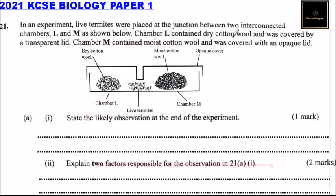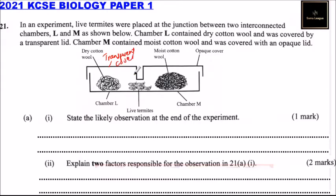Chamber L contained dry cotton wool and was covered by a transparent lid. Chamber M contained moist cotton wool and was covered with an opaque lid. We have our diagram here — this is chamber L with dry cotton, our termites at the junction, and chamber M with moist cotton and an opaque cover.